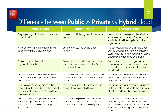Fifth, hardware components must be provided by the organization itself for private cloud. In the case of public cloud, the CSP provides all the hardware and ensures it is working at all times. In the case of hybrid cloud, the organization must provide hardware for the private cloud, while the CSP's hardware is used for public cloud services.